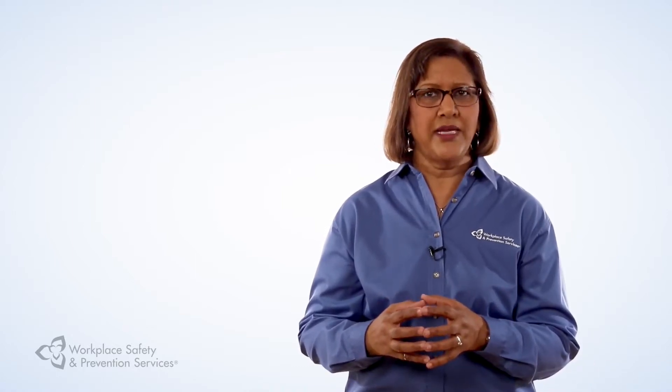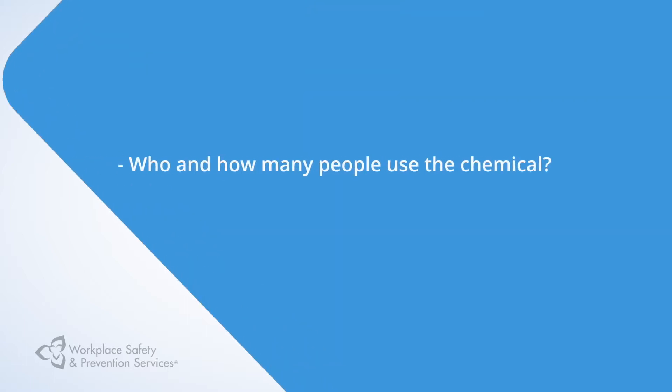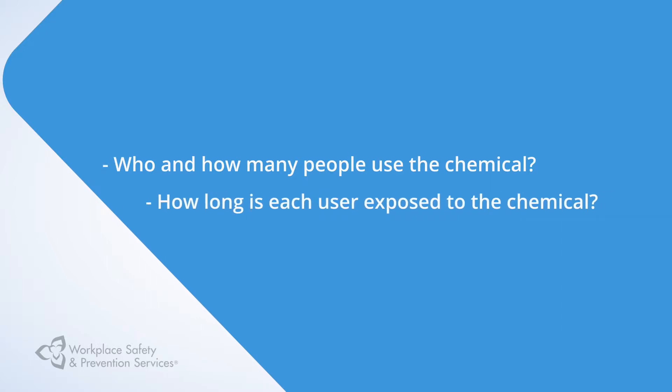Once you have identified the associated hazards for chemicals in your facility, you will need to assess what the potential exposure would be for each. These questions will help you anticipate and estimate the potential for exposure. Who and how many people use the chemical? If only a few people are authorized to use the product, exposure may be limited. How long is each user exposed to the chemical? If the chemical is integral to the process being carried out, workers are likely to be exposed for the entire shift.